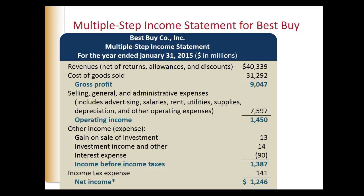Gross profit is the first level of profit in the multiple-step income statement, calculated as net sales minus cost of goods sold — it's really important to remember that. Operating income is the next step after gross profit. The next items reported are selling, general, and administrative expenses, often called operating expenses, like rent, utilities, and salaries. Gross profit reduced by these operating expenses is referred to as operating income or income from operations. It measures profitability from normal operations, a key performance measure for predicting future profit-generating ability.